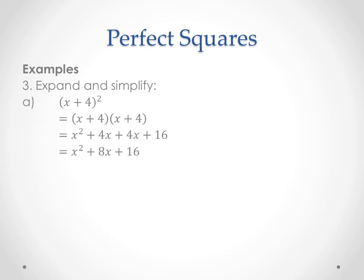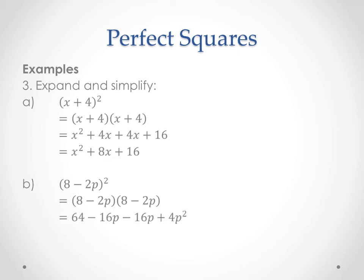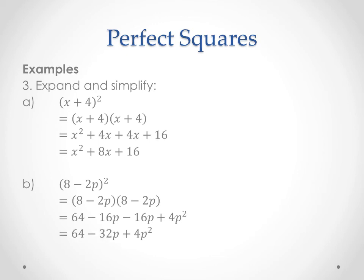Let's look at a second example to see the pattern: 8 minus 2p all squared is 8 minus 2p times 8 minus 2p. We get 8 times 8 is 64, 8 times negative 2p is negative 16p, negative 2p times 8 is also negative 16p, and negative 2p times negative 2p is positive 4p squared — be careful with your sign. Combining like terms: negative 16p minus 16p is negative 32p. So this simplifies to 64 minus 32p plus 4p squared.